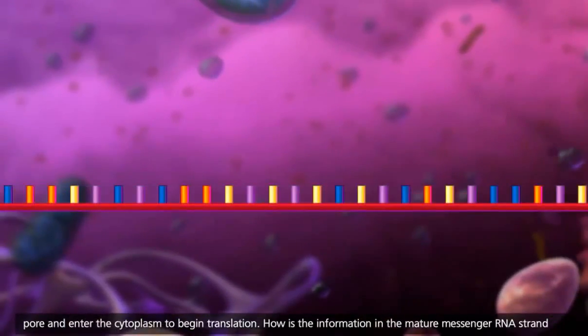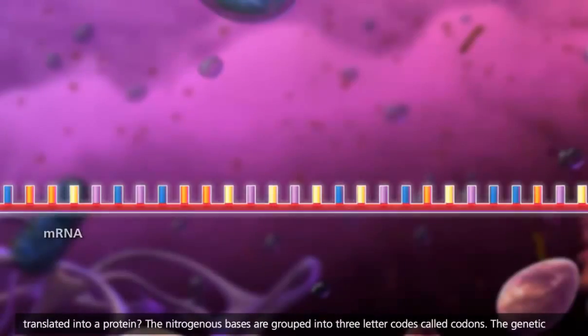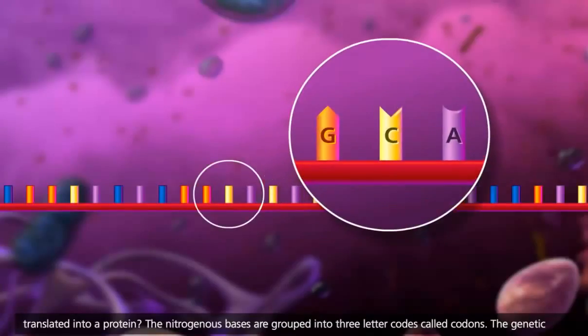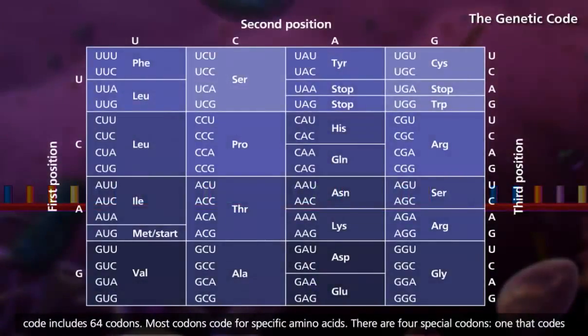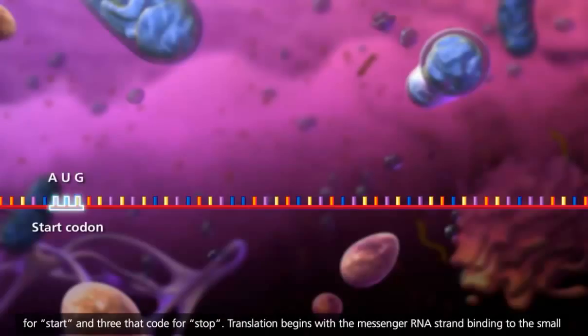How is the information in the mature messenger RNA strand translated into a protein? The nitrogenous bases are grouped into three-letter codes called codons. The genetic code includes 64 codons. Most codons code for specific amino acids. There are four special codons, one that codes for start and three that code for stop.